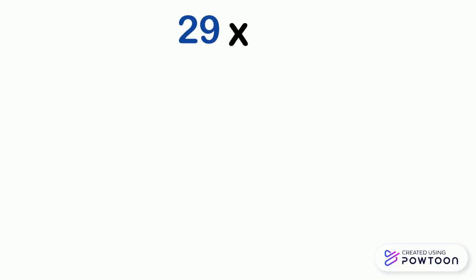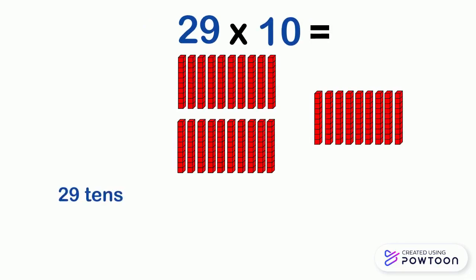Another example. 29 times 10. 29 times 10 is 29 tenths. So it's 20 tenths plus 9 tenths. And as we know that 20 tenths equals 200 and 9 tenths equals 90. So 29 times 10 equals 290.